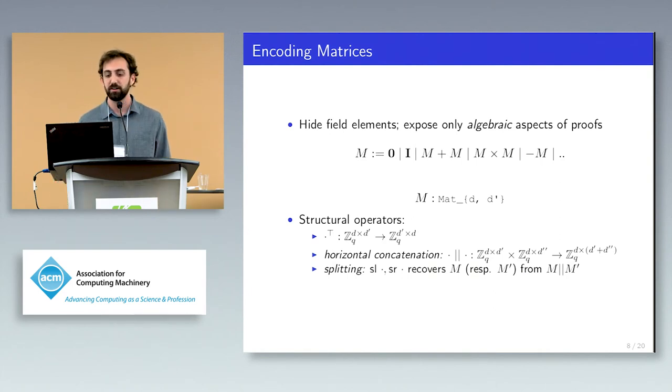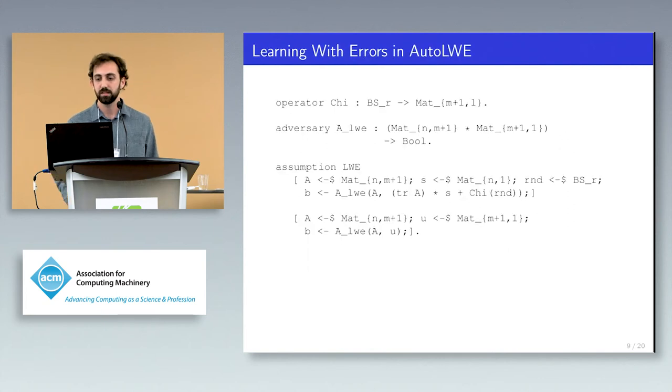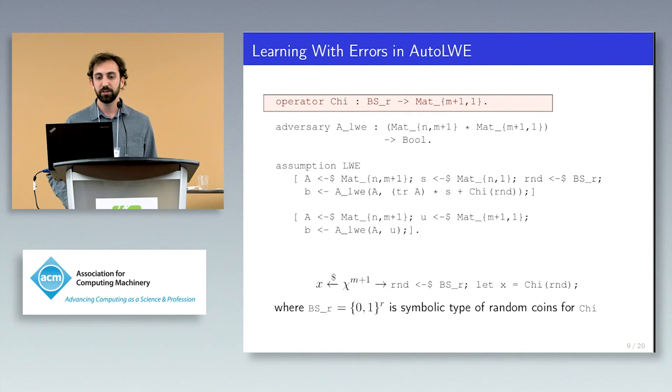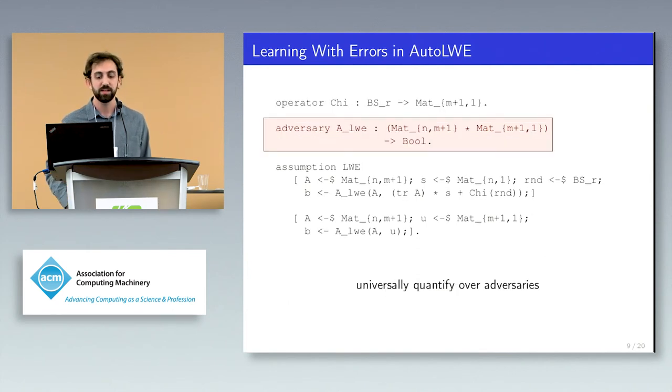Now I can describe how we may encode the learning with errors assumption in our logic. In order to describe distributions which are not uniform, we first think of the distribution as a deterministic function of a source of random coins. This can then be represented as an uninterpreted function. The reason this is fine to do is that in order to prove security, the only property we need about this error distribution is how it interacts with the hardness assumption, and nothing else. Now, this line allows us to universally quantify over adversaries. The adversary takes input a matrix along with a collection of noisy inner products, or uniform, and outputs a guess bit. Note that the second dimension of this first matrix is M plus 1. This means that this matrix can be split into a left side of dimension N by M, and a right side of dimension N by 1. This corresponds to the A and the U in this dual Regev security game.